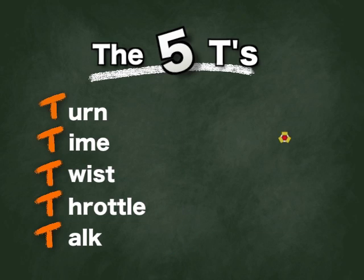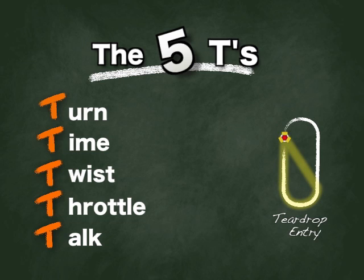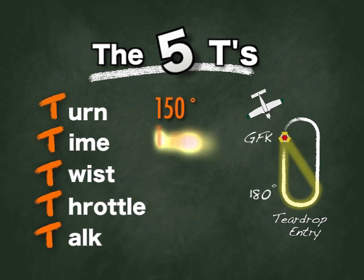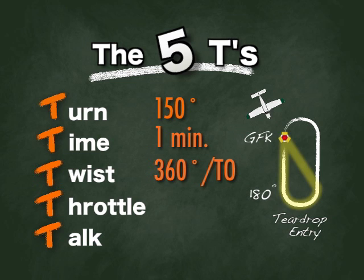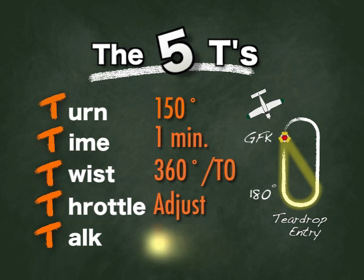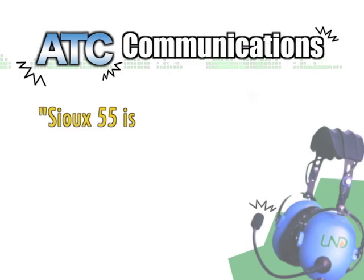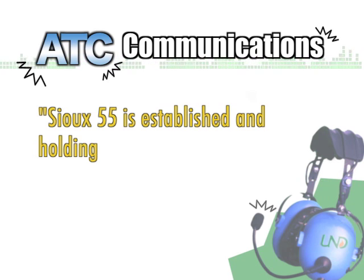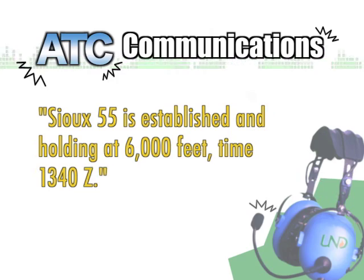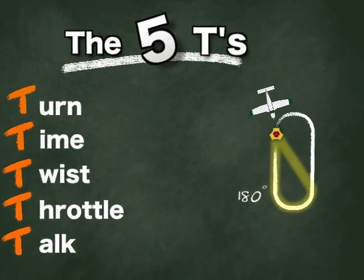Let's simulate a teardrop entry into a standard pattern holding off of the 180-degree radial from the Grand Forks VOR. Prior to executing the teardrop, the pilot would consider a turn to 150 degrees for the teardrop entry, beginning timing for approximately one minute as the aircraft crosses the VOR, twisting the VOR's OBS setting to 360 degrees with a 'to' indication for correct sensing on the inbound leg, adjusting throttle to maintain the proper holding airspeed, and talking to let ATC know that Su-55 is established and holding at 6,000 feet, time 1340 Zulu.